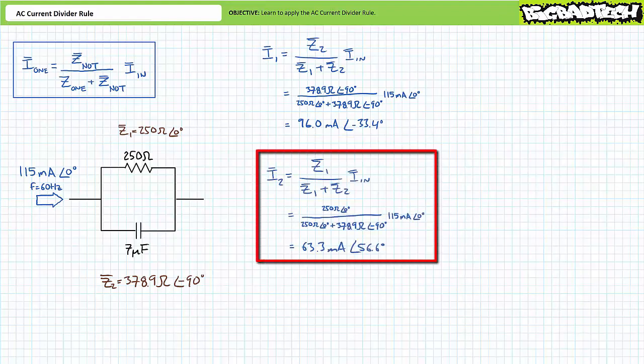Similarly, the AC current divider rule set up to solve for I2 suggests that I2 equals Z1 divided by Z1 plus Z2 times incoming current IN. Substituting our given values yields I2 to be 63.3 milliamperes at an angle of 56.6 degrees.